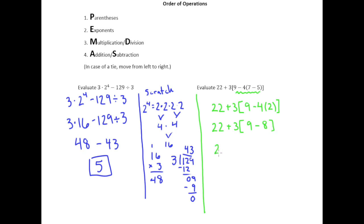And then finally we can finish what's in the brackets there. 9 minus 8 is 1. And then what do we have left? We have addition and then we have multiplication. And we know that multiplication comes first.